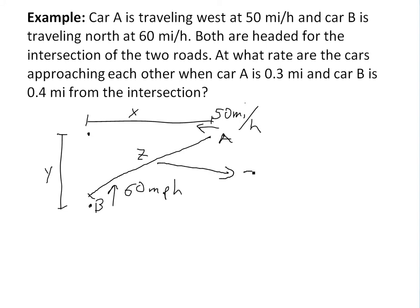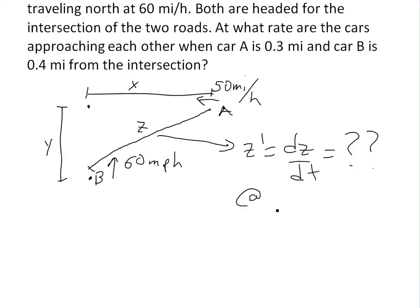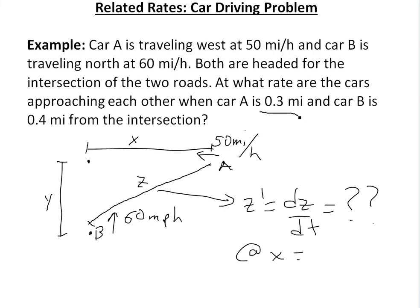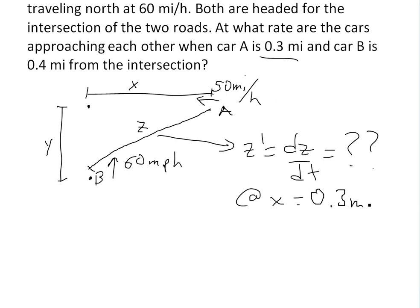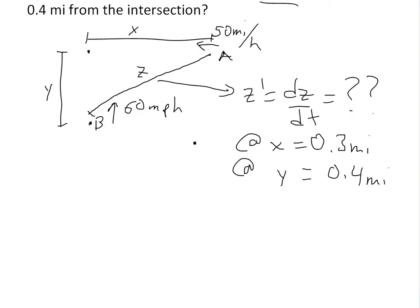We're looking for z prime, which equals dz/dt — the rate at which the cars are approaching each other. We evaluate this when x equals 0.3 miles and y equals 0.4 miles. In related rates problems, the idea is to relate the rate we want, z prime, to rates we already know — in this case x prime and y prime, which are 50 and 60 miles per hour.